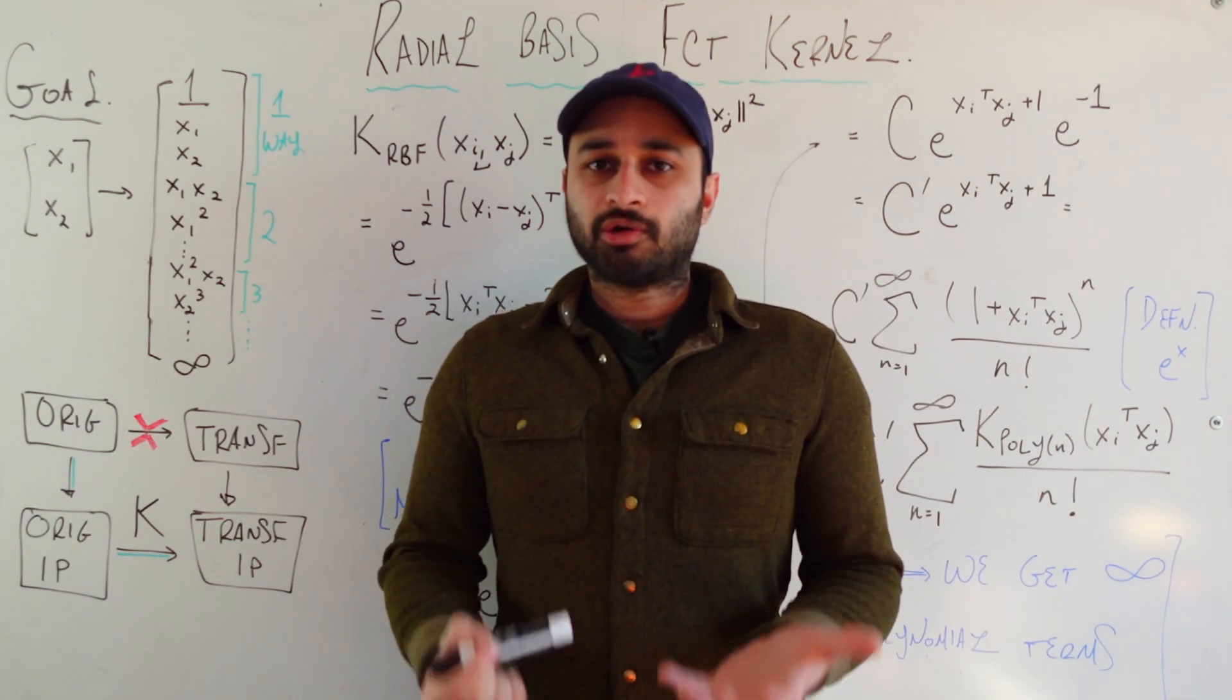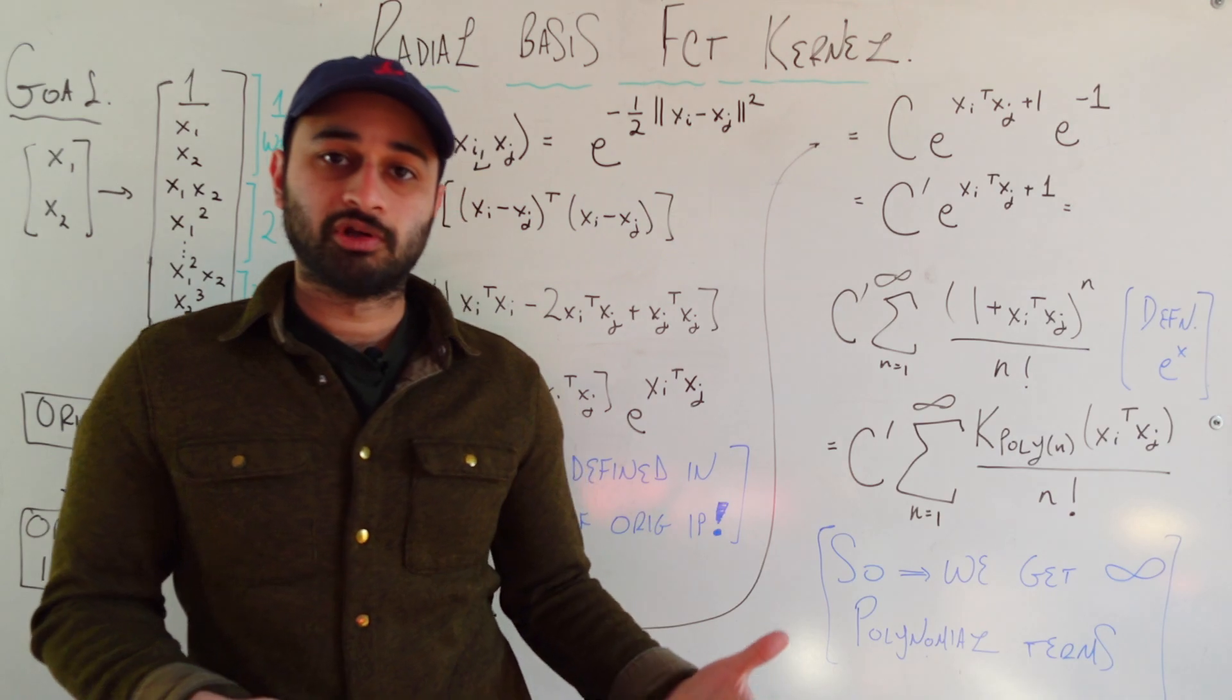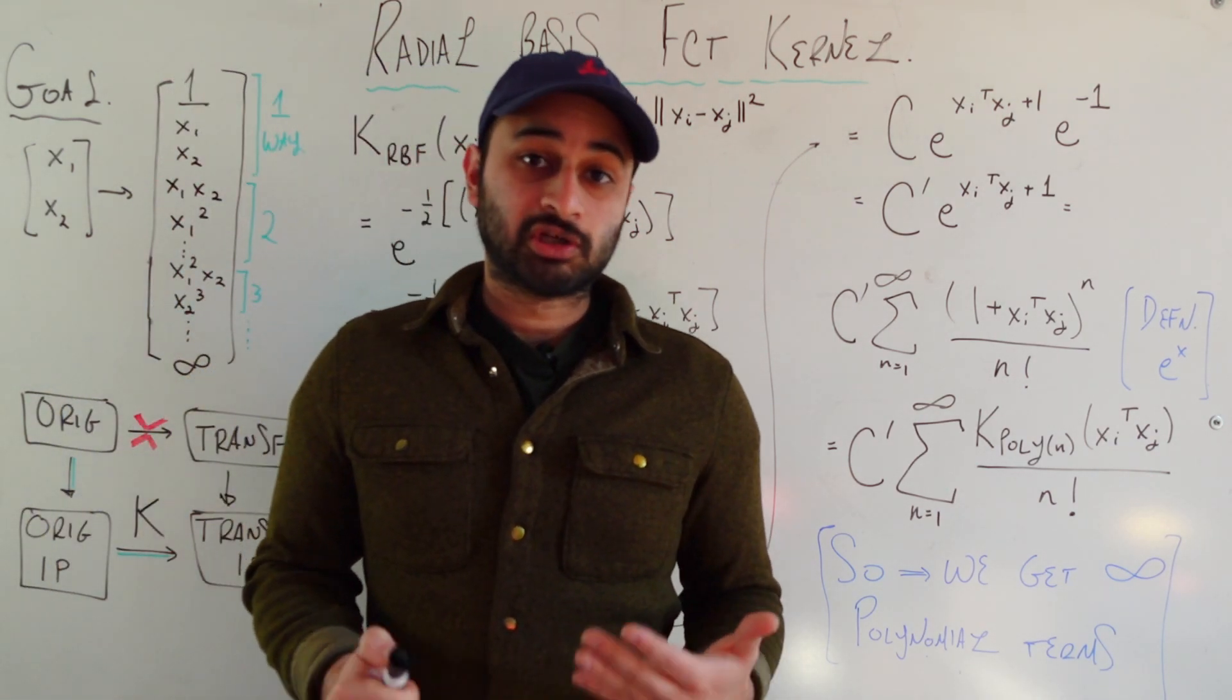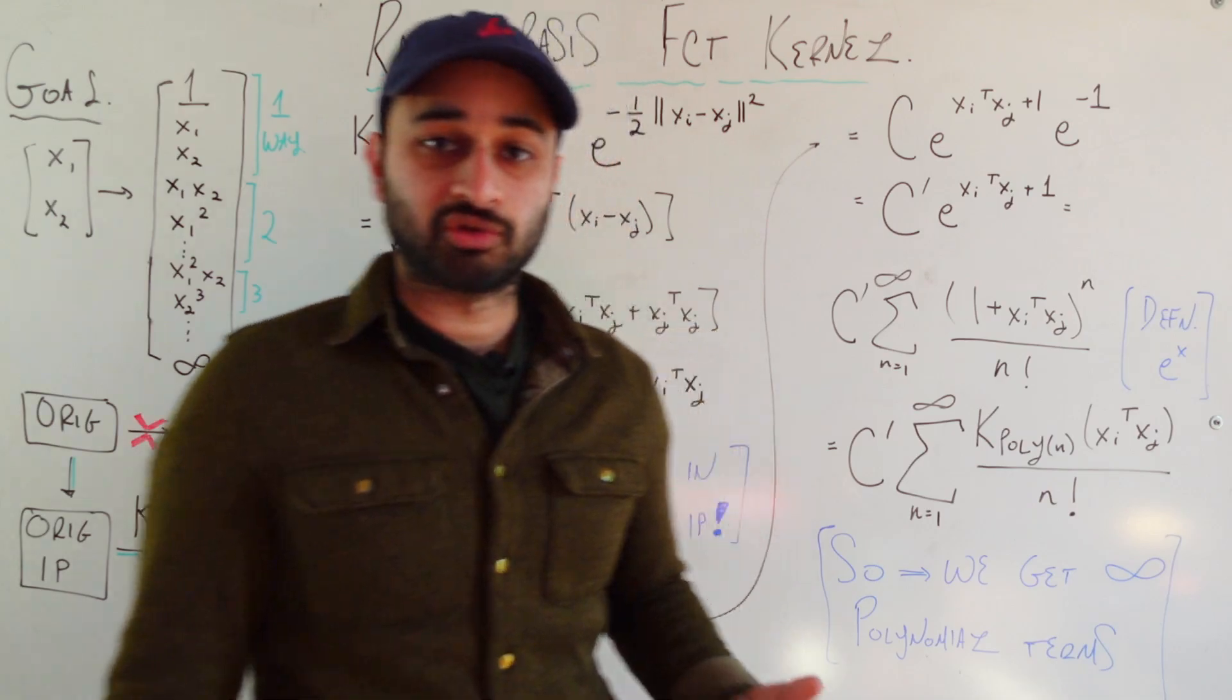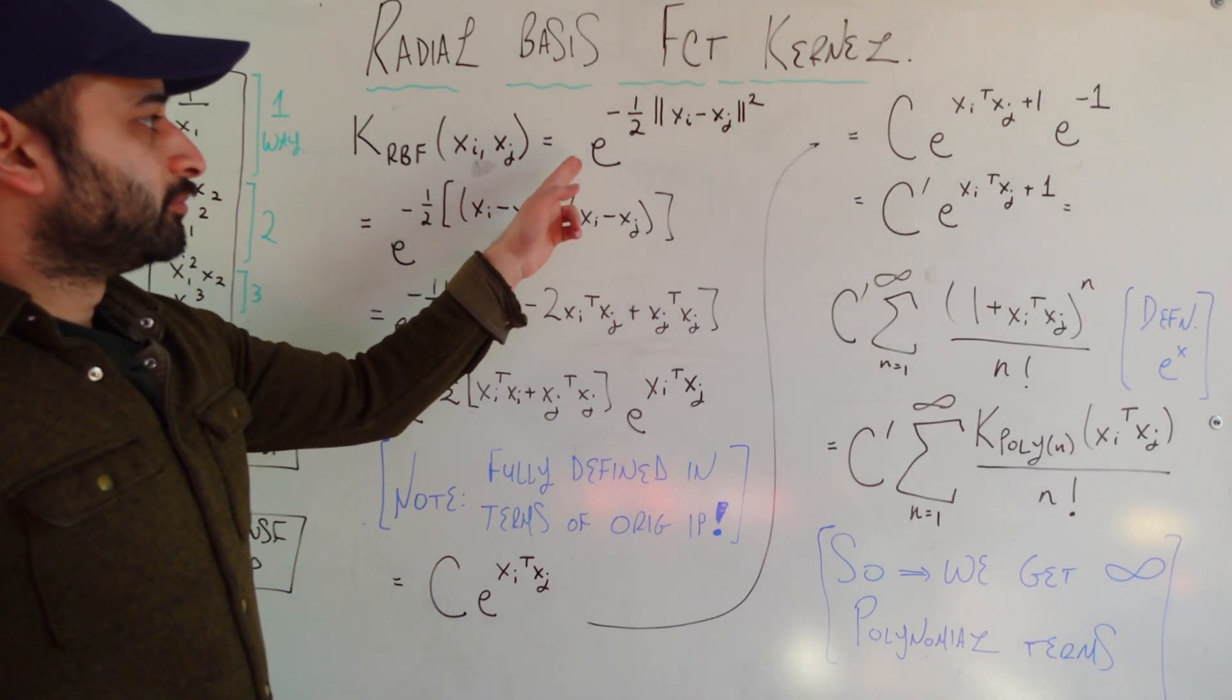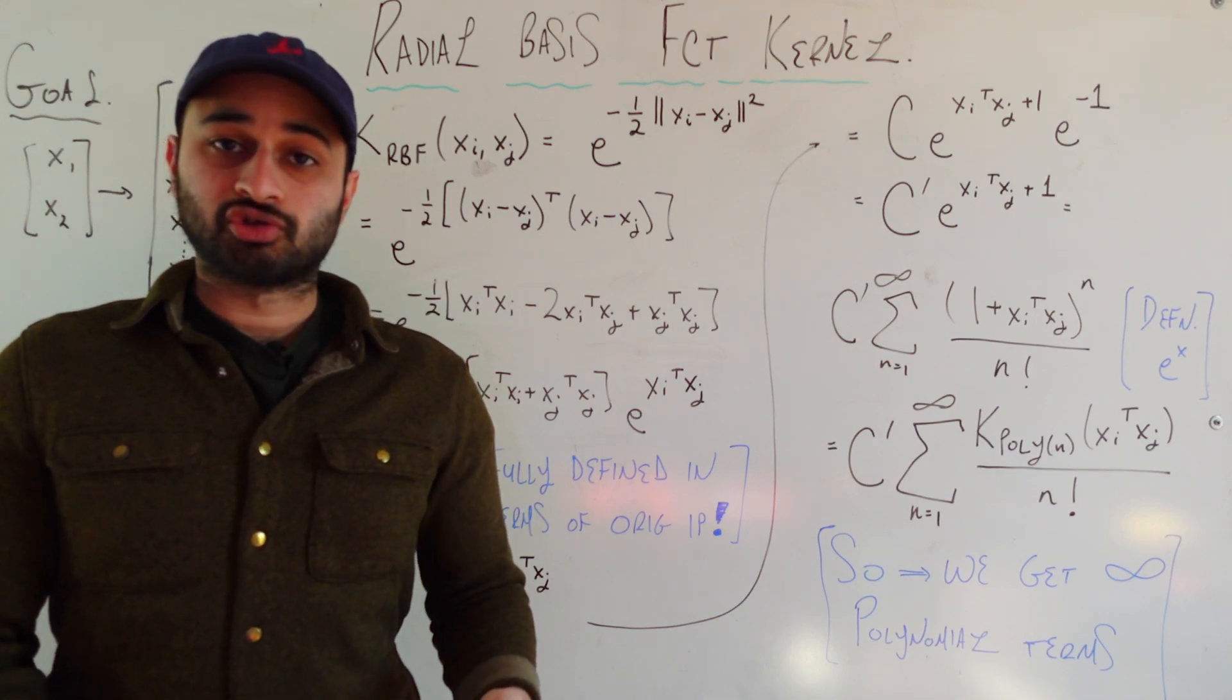And so of course the question is, how does the radial basis function actually formulate its kernel? And what I'll do is show you the formulation and then we'll kind of back derive, which means we're going to show that if we write the kernel in this way, it does actually solve the goal or achieve the goal of getting an infinite dimensional projection of your original data. So let's start from the actual definition. The radial basis function kernel of xi and xj is given by e to the power of negative one half, the norm of xi minus xj squared, and that's the L2 norm.